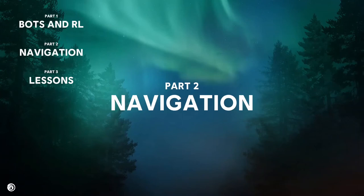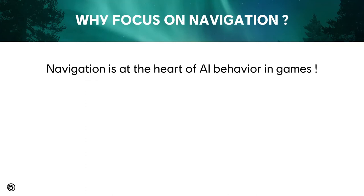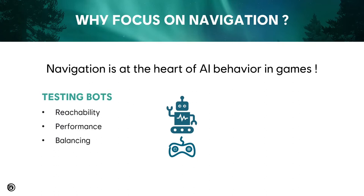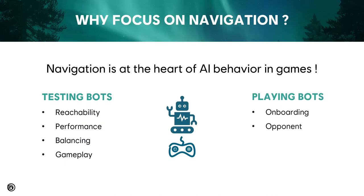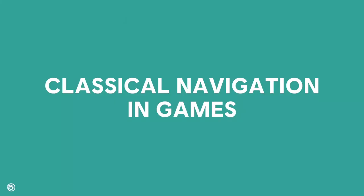Let's now talk about a specific slice of the overall bots problem that we can actually tackle: the navigation problem. Why focus on navigation? Navigation is at the heart of all AI behavior in games. Recall all the examples of testing — reachability, performance, balancing, gameplay — and playing bots, onboarding, opponents, teammates. Navigation is at the heart. If you want any AI to perform any of these tasks, they need to be able to navigate. And isn't navigation already solved? The answer is yes and no.